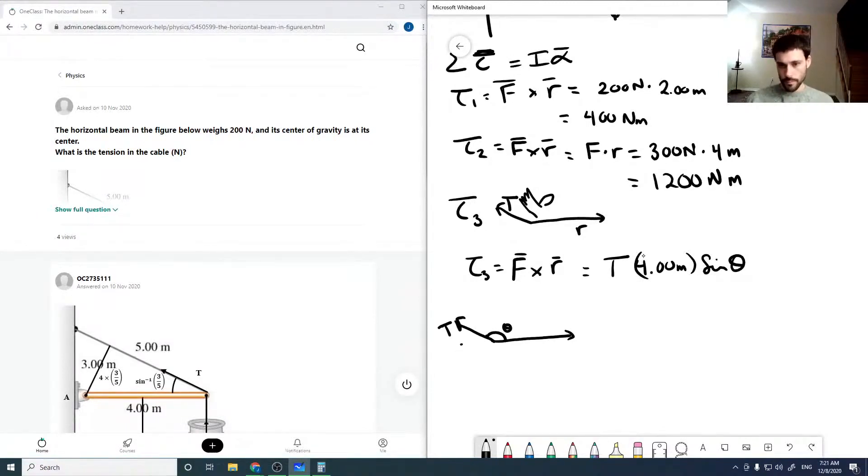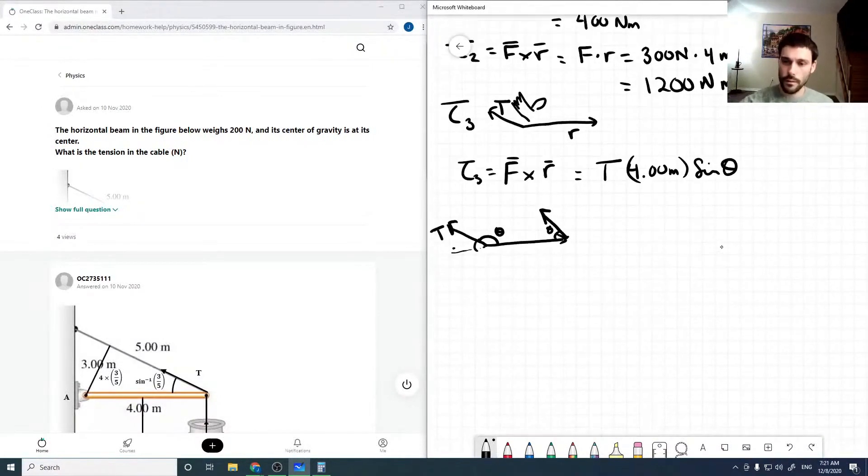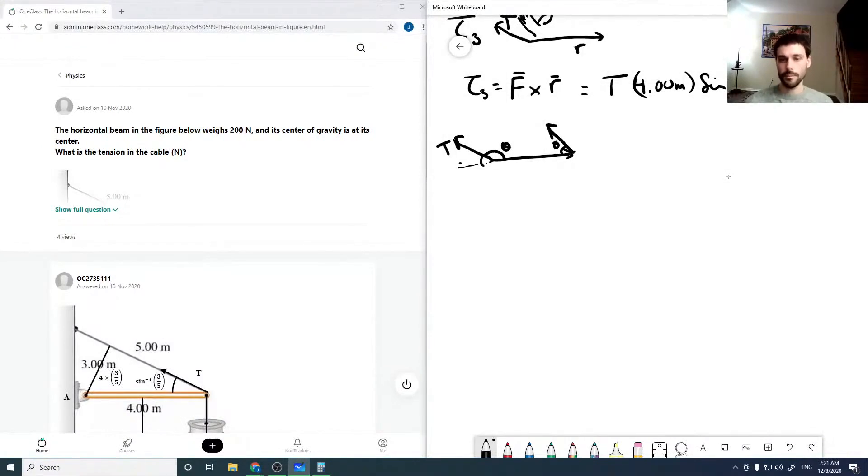I'm going to resketch the figure just to make this even more obvious. We've got a triangle. The tension is acting this way. Tension at joint end to end, so that angle and that angle are the same. We're given that this is three meters, this is five meters, and this is four meters.